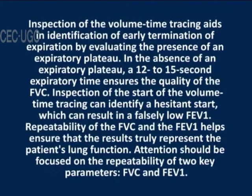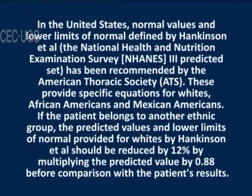Repeatability of FVC and FEV1 helps ensure results truly represent the patient's lung function, with attention focused on these two key parameters. In the United States, normal values and lower limits of normal are defined by Hankinson et al. The NHANES 3 predicted set has been recommended by the ATS, providing specific equations for whites, African Americans, and Mexican Americans. For other ethnic groups, predicted values should be reduced by 12% by multiplying by 0.88 before comparison.